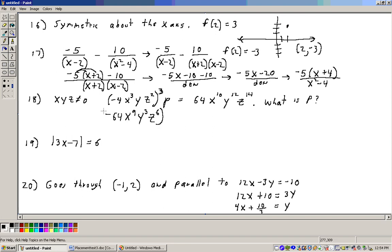Now, that times P is going to give me 64x to the 10th, y to the 12th, z to the 14th. Now, what am I missing? What does P need to be to give me this up here? Well, first of all, this is positive and this is negative. So the P is going to have to be negative.